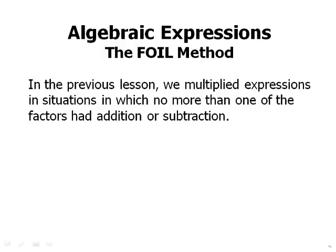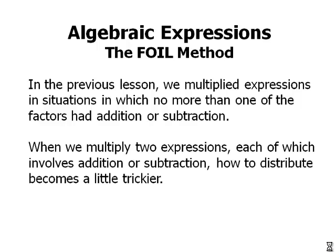Now we can talk about the FOIL method. In the previous lessons, we multiplied expressions in situations where no more than one of the factors had addition or subtraction. When we multiply two expressions, each of which involves addition or subtraction, how to distribute becomes a little bit trickier.